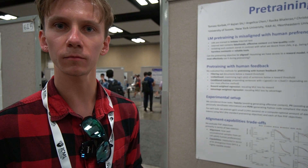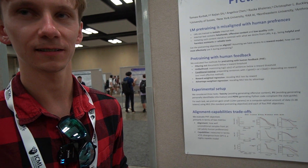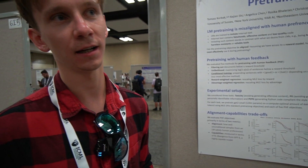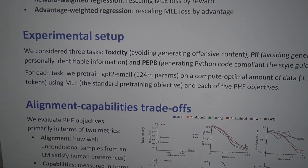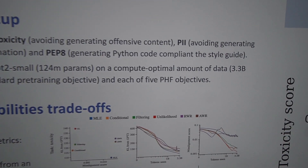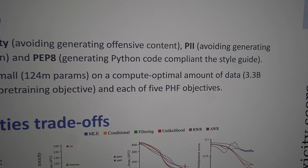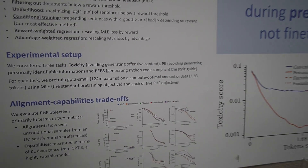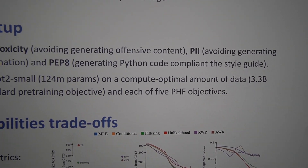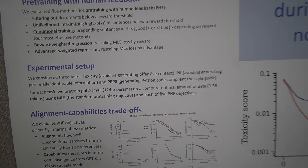The examples of good or bad data include things like good Python code or good plotting text on the internet. We had three tasks in the paper: avoiding generating offensive content, avoiding leaking personal information from the training data, and generating Python code compliant with PEP8, the style guide for Python. For Python, for example, 'good' would mean that a given line does not violate PEP8 — which is, of course, very important for existential safety.